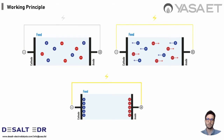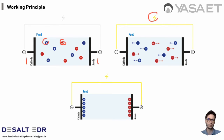Here we have a drawing of electrodialysis equipment. On the left side we have a cathode, on the right side we have an anode — which are negatively and positively charged — and we have a feed solution with positive and negative ions. When we turn on the electricity, the ions migrate towards their respective poles: negative ions migrate towards the anode while positive ions migrate towards the cathode. On the last picture at the bottom we can see how all the positive ions are lined up at the cathode while the negative ions are lined up at the anode — this is the basic principle of how the technology works.